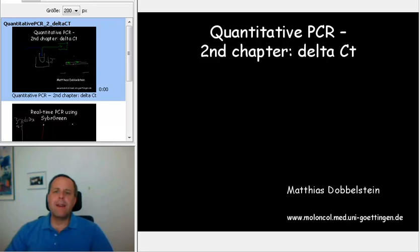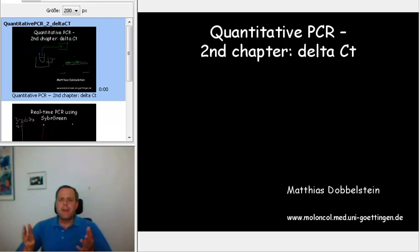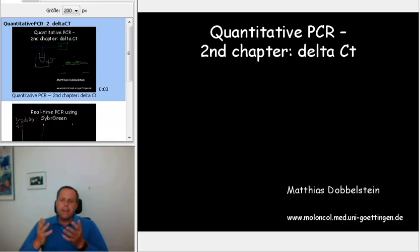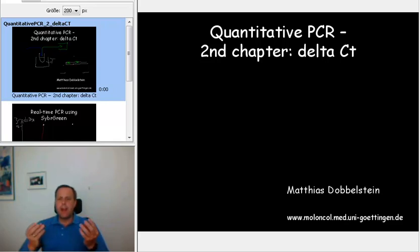Hello again. I'm now back for our second short lecture on quantitative PCR. What I'll be covering now is what we call real-time PCR — continuous monitoring of the amplification of our PCR product. Furthermore, I'll be talking about what we call the Delta CT method to calculate the ratio, or the fold difference, between the specific DNA amounts that we have in two or more different samples.